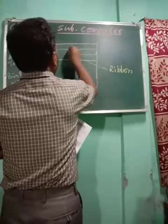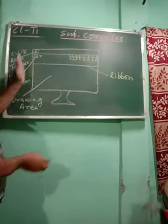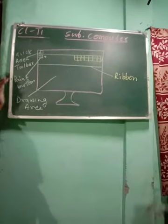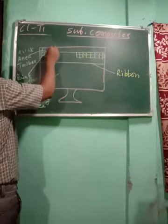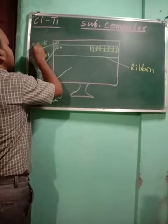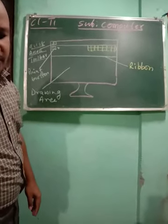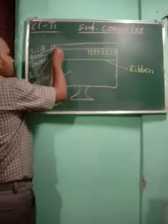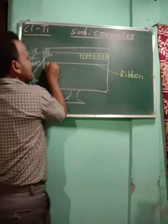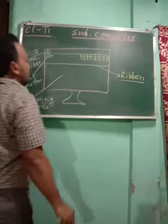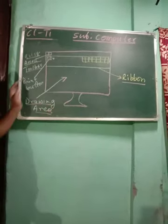Here you will have all your colors. I have tried to make your Paint window on the blackboard. On the left-hand side at the top, that small box is known as the Quick Access Toolbar, where you click to get different types of tools. Below that is your Paint button. The last line at the bottom is called the Ribbon, and the area where you make your drawing is called the Drawing Area.